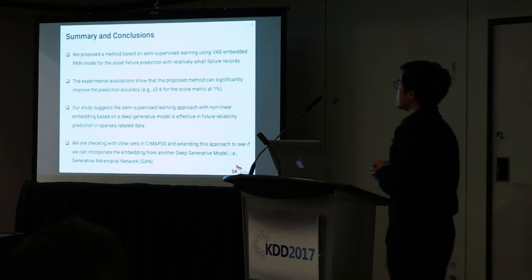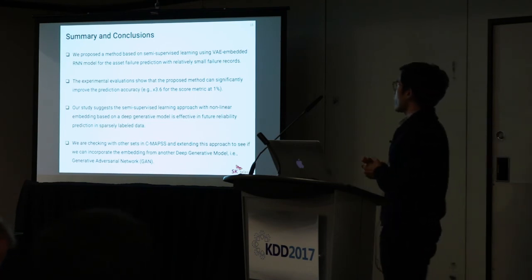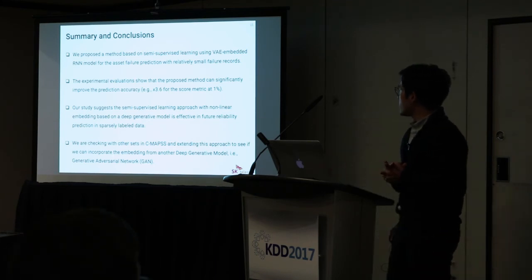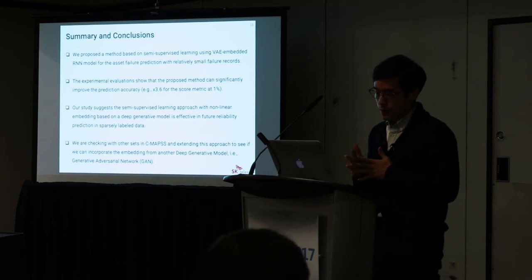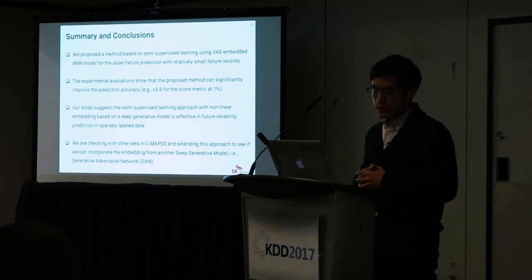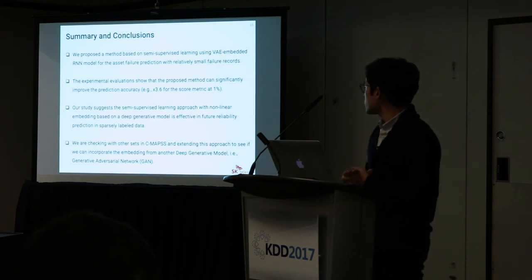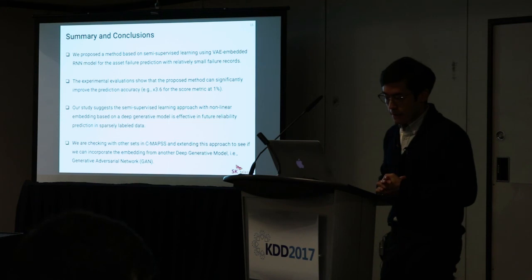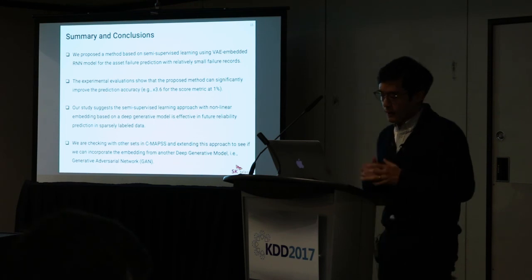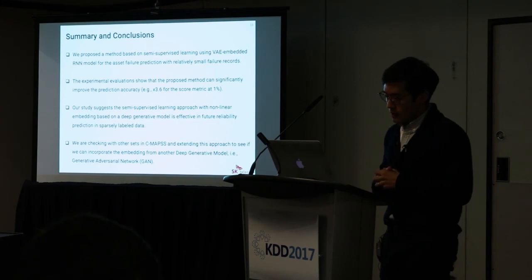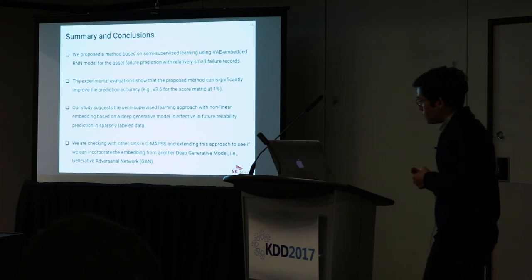To conclude, we proposed a method based on semi-supervised learning using a VAE-embedded RNN model for asset failure prediction with relatively small failure records. Experimental evaluation shows the proposed method can significantly improve prediction accuracy — for example, a factor of 3.6 on the score metric at 1% labeled data. Our study suggests that semi-supervised learning with nonlinear embedding based on a deep generative model is effective for reliability prediction with sparsely labeled data. We are currently validating on the other three CMAPS datasets and exploring incorporating generative adversarial networks.